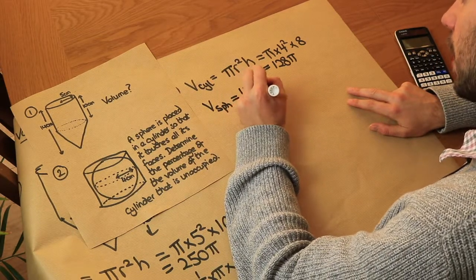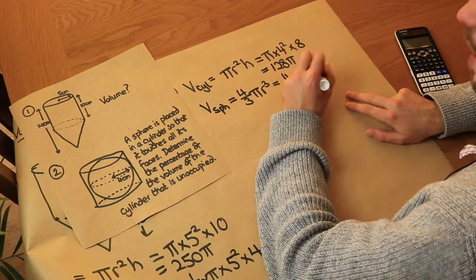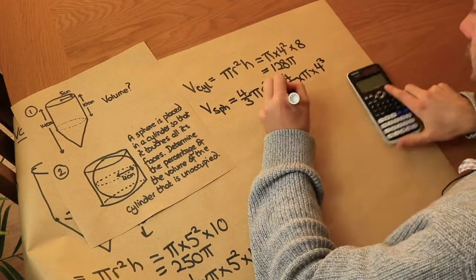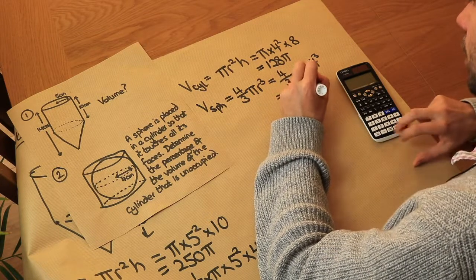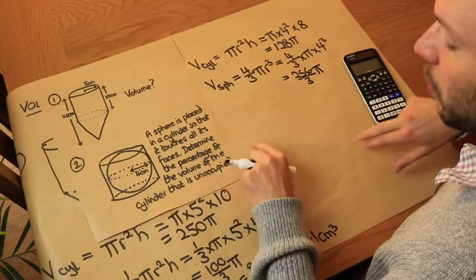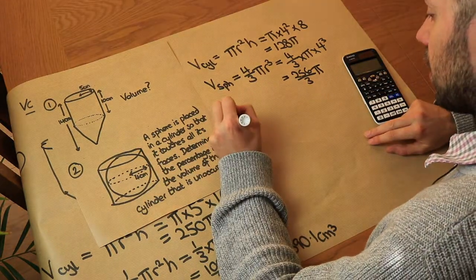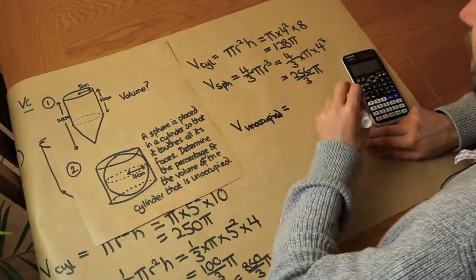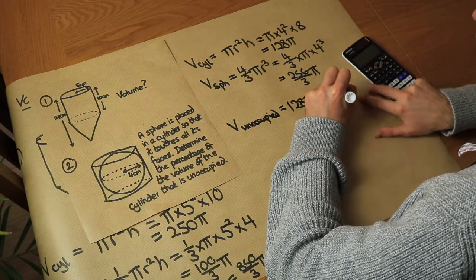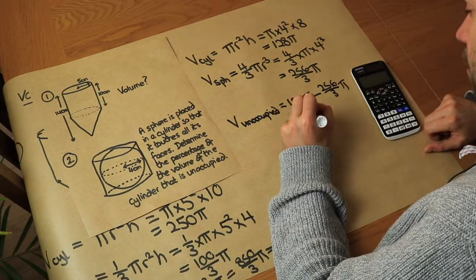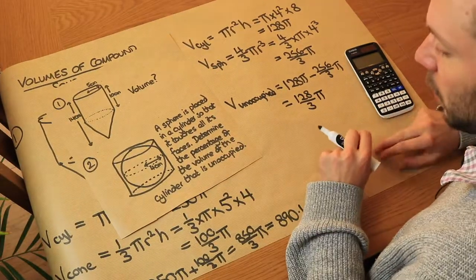The formula for the volume of a sphere is 4/3 π r³. So it's 4/3 times π times 4 cubed, which gives us 256/3 π. The volume of the unoccupied part of the cylinder is 128π minus 256/3 π, which equals 128/3 π.